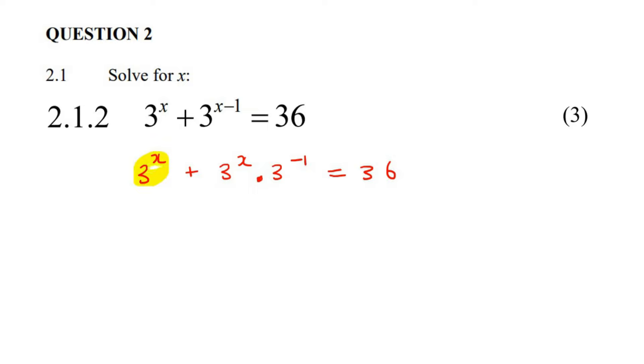Now can you see there's a common factor over here? Okay, so you're going to take out that common factor of 3^x, and then you'd be left with 1. Remember, if there's nothing here, you're still going to put a 1, plus 3^(-1) equals to 36.